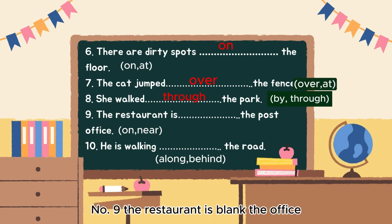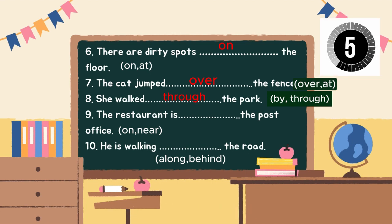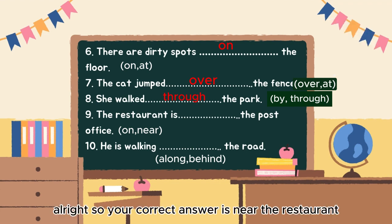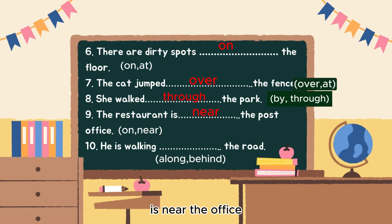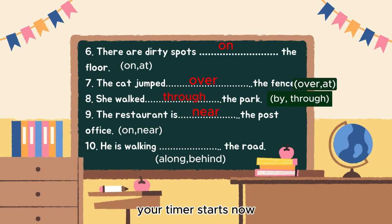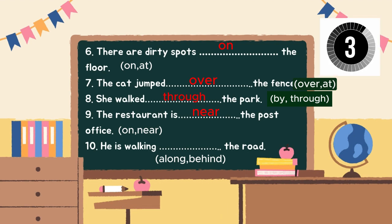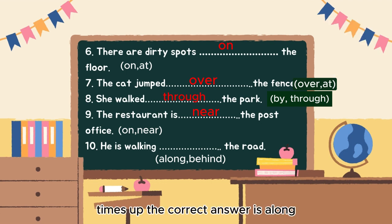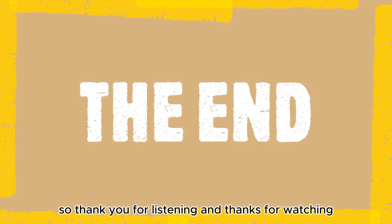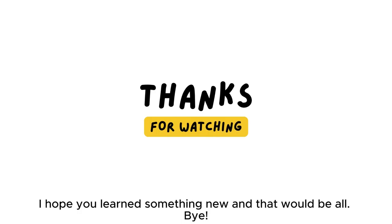Question 9: 'The restaurant is ___ the office.' The correct answer is 'near' — 'The restaurant is near the office.' Question 10: 'He is walking ___ the road.' The correct answer is 'along' — 'He is walking along the road.' Thank you for listening and thanks for watching. I hope you learned something new — and that could be all. Bye!